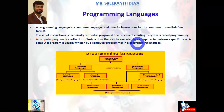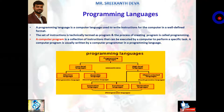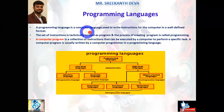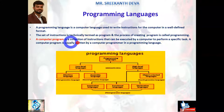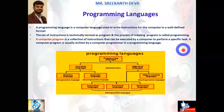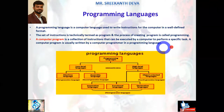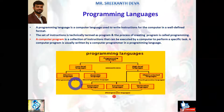A set of instructions is technically termed as a program. The process of creating a program is called programming. A programming language is a computer language used to write instructions for the computer in a well-defined format. A computer program is a collection of instructions that can be executed by a computer to perform a specific task, usually written by a computer programmer in a programming language.